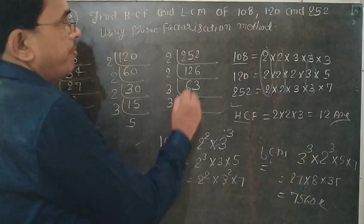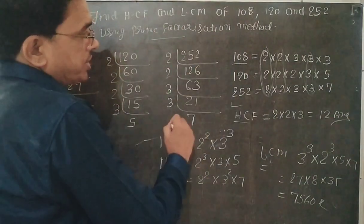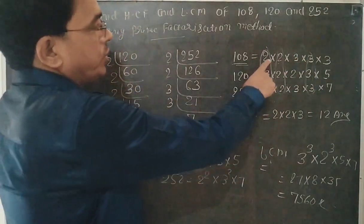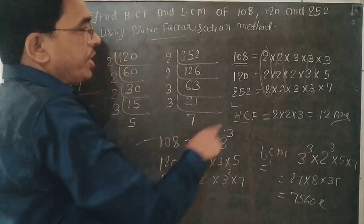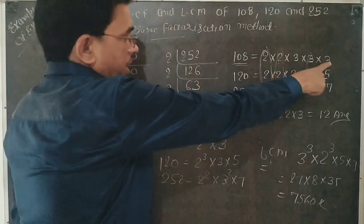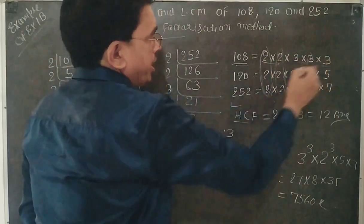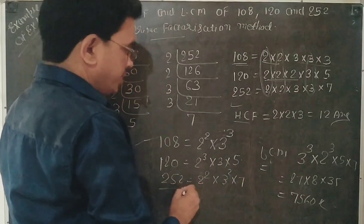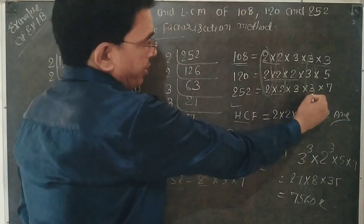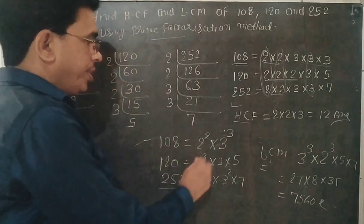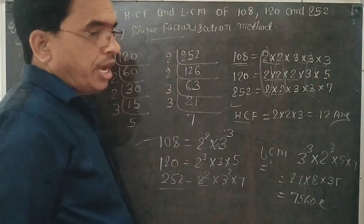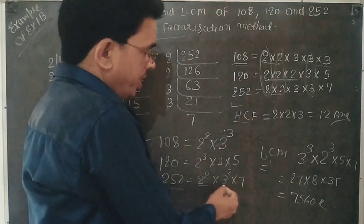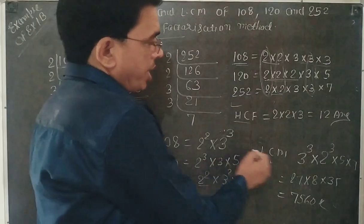Now we find the LCM by prime factorization method. Write each number in exponent form: 108 = 2² × 3³; 120 = 2³ × 3 × 5; 252 = 2² × 3² × 7. For LCM, write each prime factor with the highest exponent. For 3: the highest power is 3³. For 2: we have 2², 2³, and 2², so the highest is 2³.